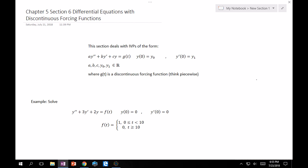Just to jump right in, we're basically going to be dealing with IVPs of the form ay'' + by' + cy = g(t) with initial conditions at zero. So y(0) equals some number y₀, and y'(0) equals some number y₁.